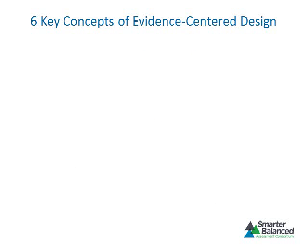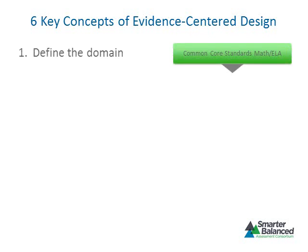The process of designing items and tasks using an evidence-centered design approach involves six key steps. The first step focuses on clearly defining the content area or domain that is to be measured. For Smarter Balanced, the content areas to be assessed are defined by the Common Core State Standards for mathematics and the Common Core State Standards for English language arts.